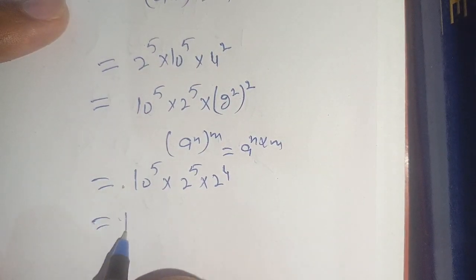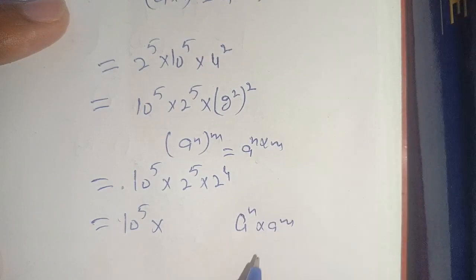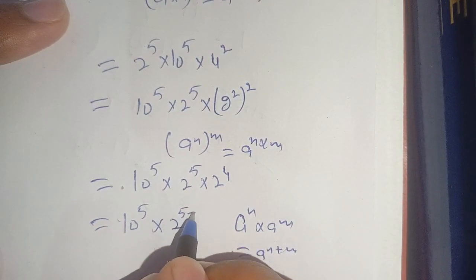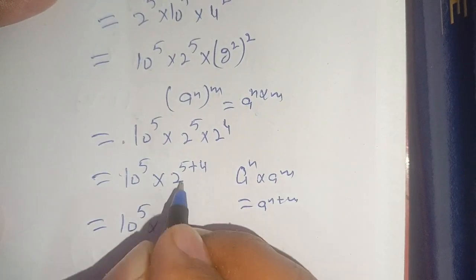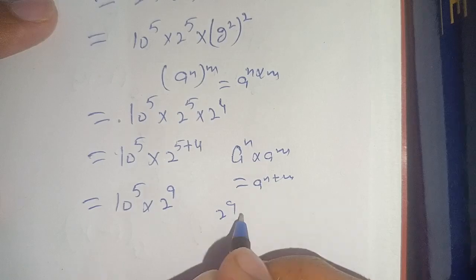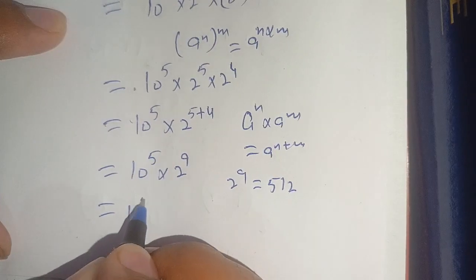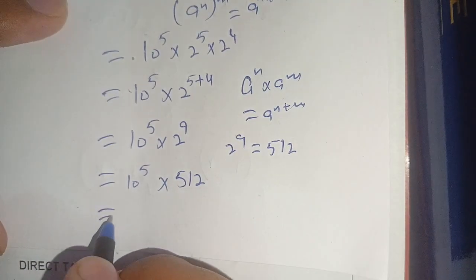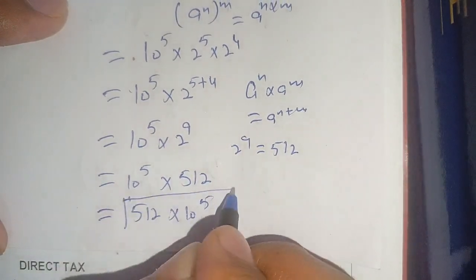Now we have 10 raised to power 5 times 2 raised to power 5 times 2 raised to power 4. Using the identity a raised to power n times a raised to power m equals a raised to power n plus m, we get 2 raised to power 5 plus 4, which equals 2 raised to power 9. Since 2 raised to power 9 equals 512, our final answer is 10 raised to power 5 times 512.